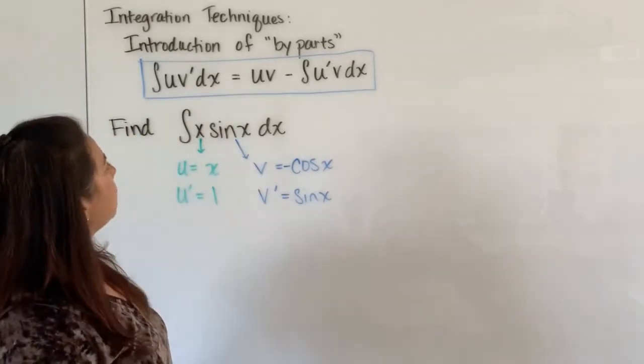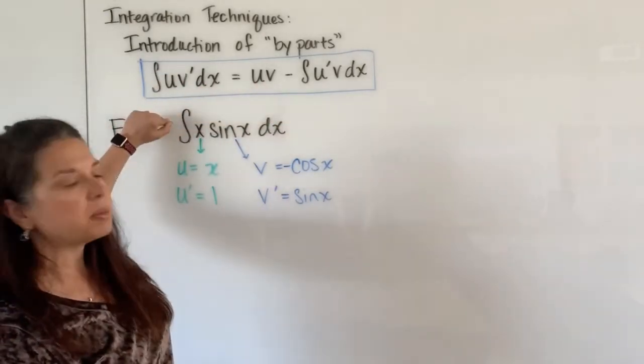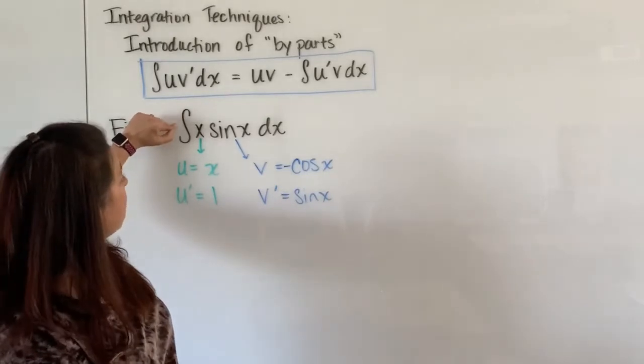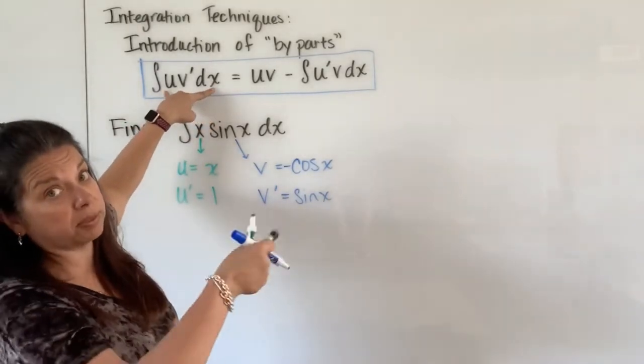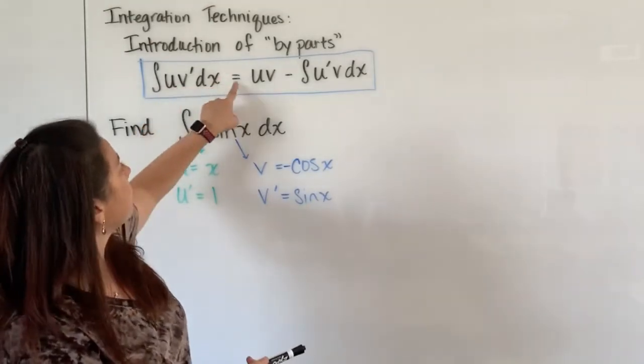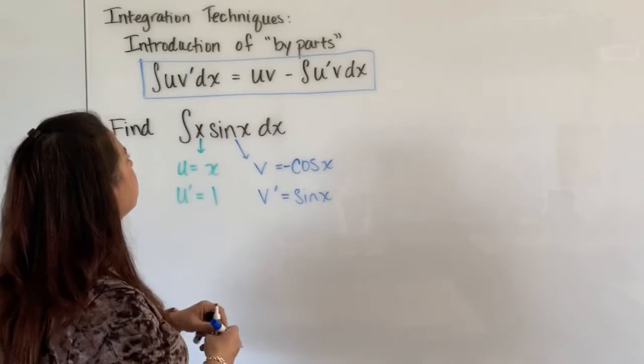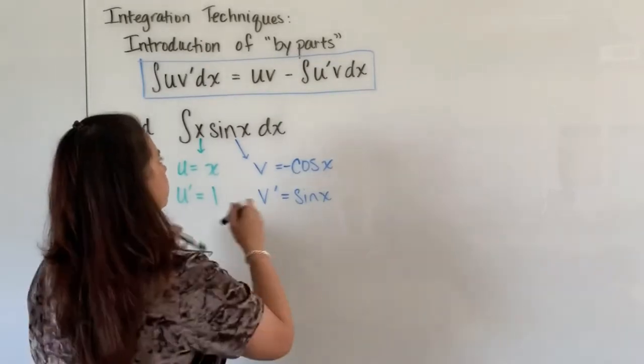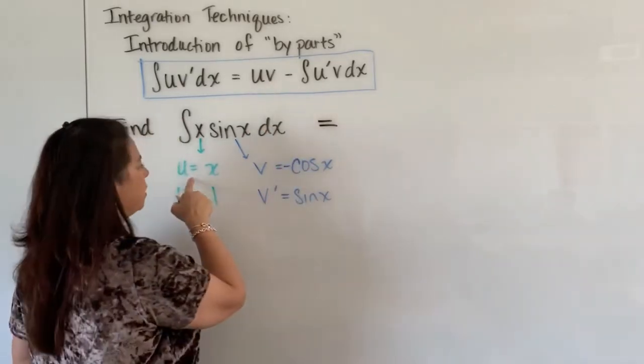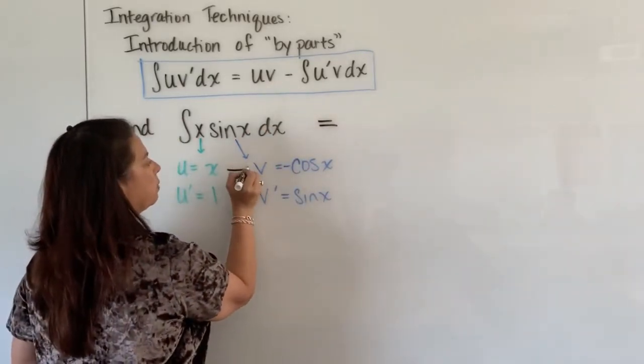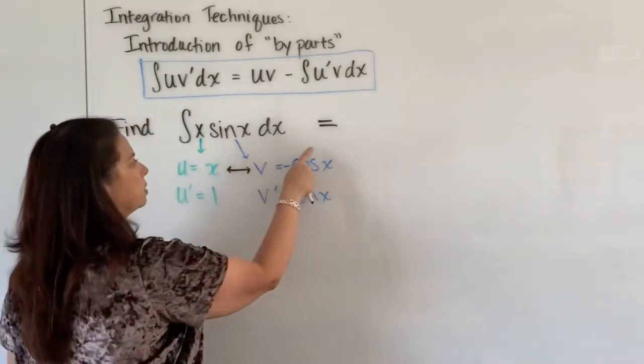Now I'm going to go back to my problem and follow along with the formula. If I'm imagining that the problem given to me, integral of x times sine x dx, is of this form integral of a u times a v prime dx, then I can continue on with the rest of the formula and I can say that then this is equal to u times v. Well here's my u and here's my v. We can multiply those pieces together, the u times the v.